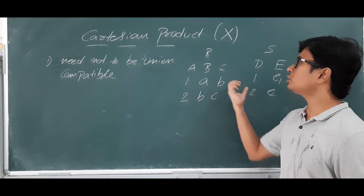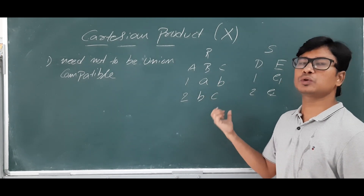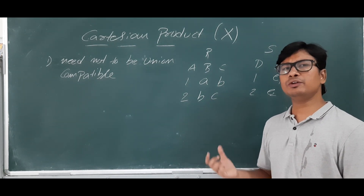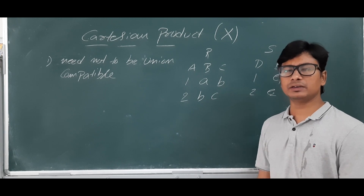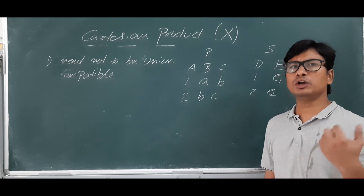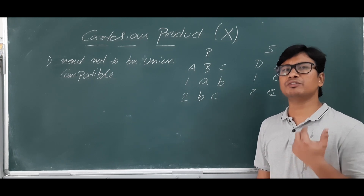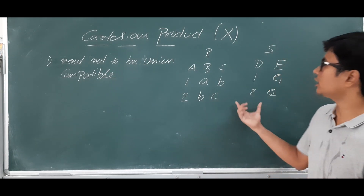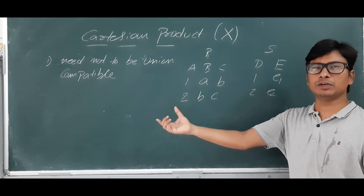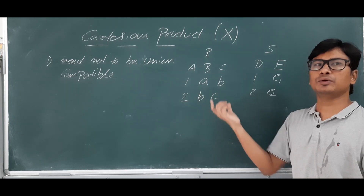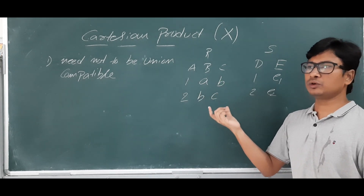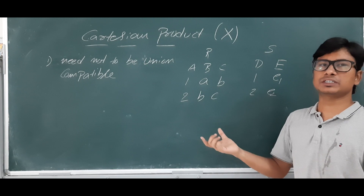You may ask: where is the cross product or Cartesian product useful? It is useful when you want to combine two relations. You need to combine relations when you want to retrieve information from two different tables.